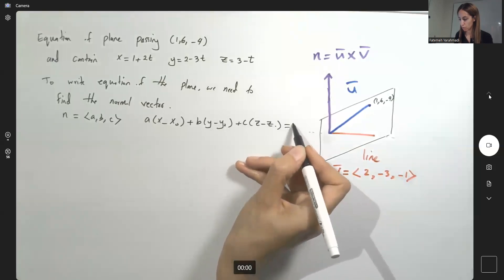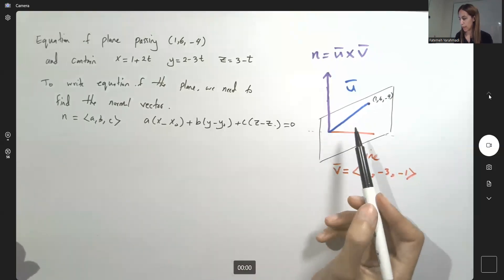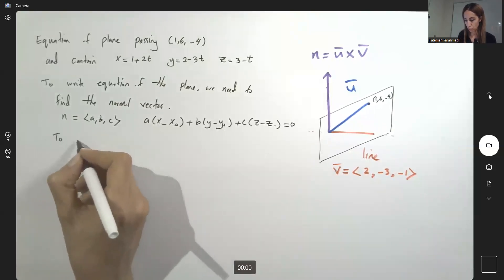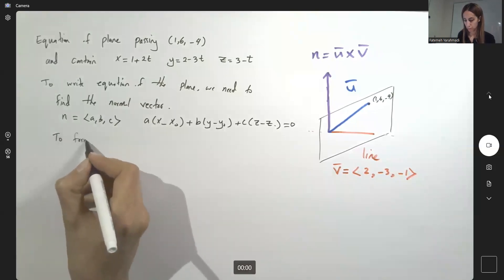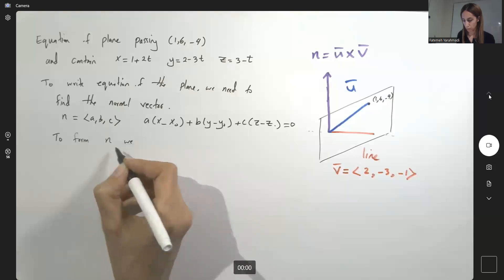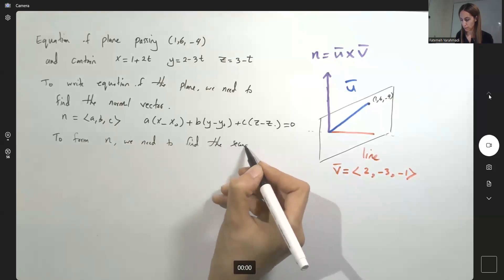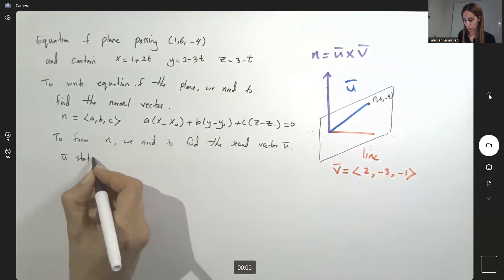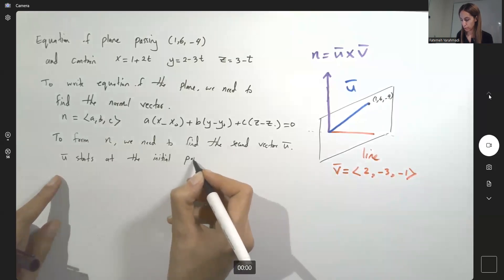And after simplification, we have the equation of this plane, but we have one vector v, we need to find the second vector u.